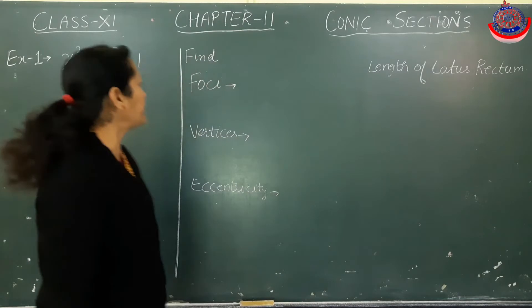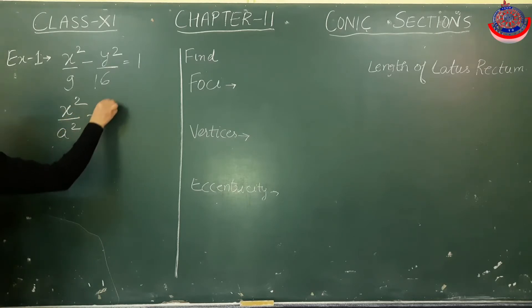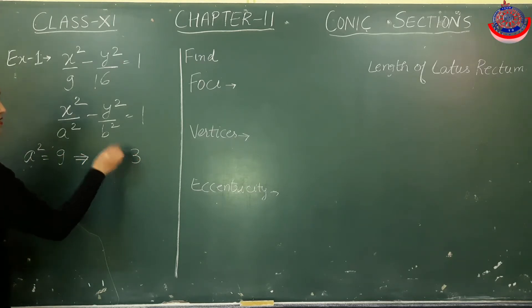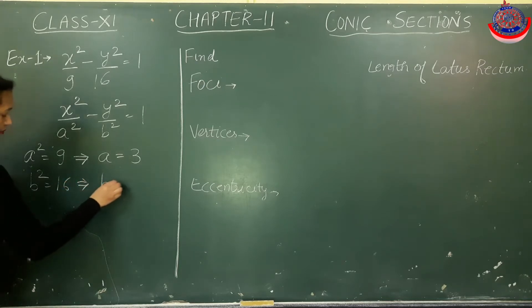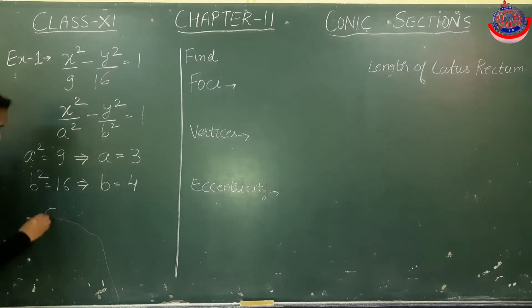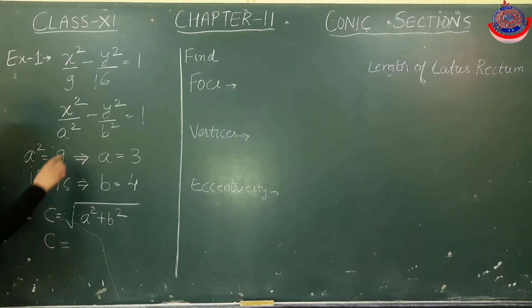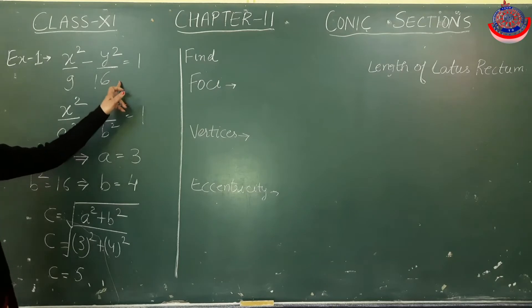If we compare our given equation x²/9 - y²/16 = 1 with the standard form x²/a² - y²/b² = 1, then a² = 9 which implies a = ±3, so a = 3. b² = 16 implies b = ±4, so b = 4. We know c = √(a² + b²). c is always greater than a and b in case of hyperbola. It is √(3² + 4²) = √(9 + 16) = √25, so c = 5.